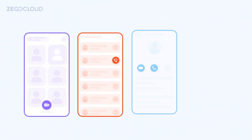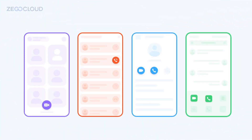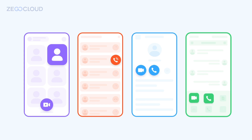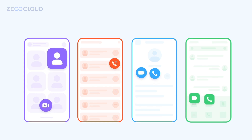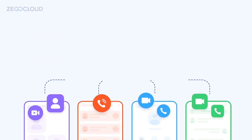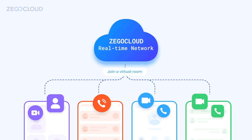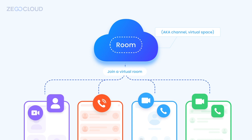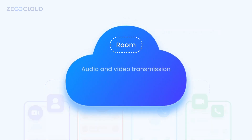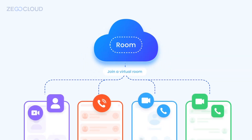Based on the room list developed by your business logic, there are many simultaneous real-time interactive entries in your app. These entries are powered by Zego Cloud Realtime Network. Each entry leads to a virtual space, which we call a room. It is defined to manage audio and video transmission, messaging and signaling occurring in the same room. To distinguish and manage different rooms, each has a unique room ID.